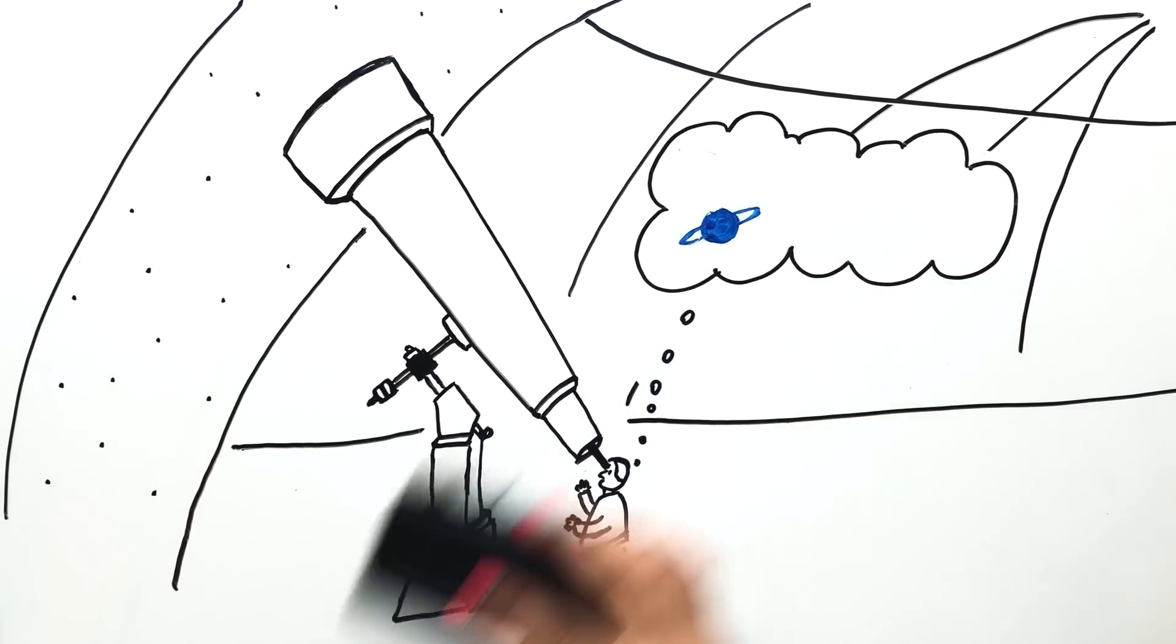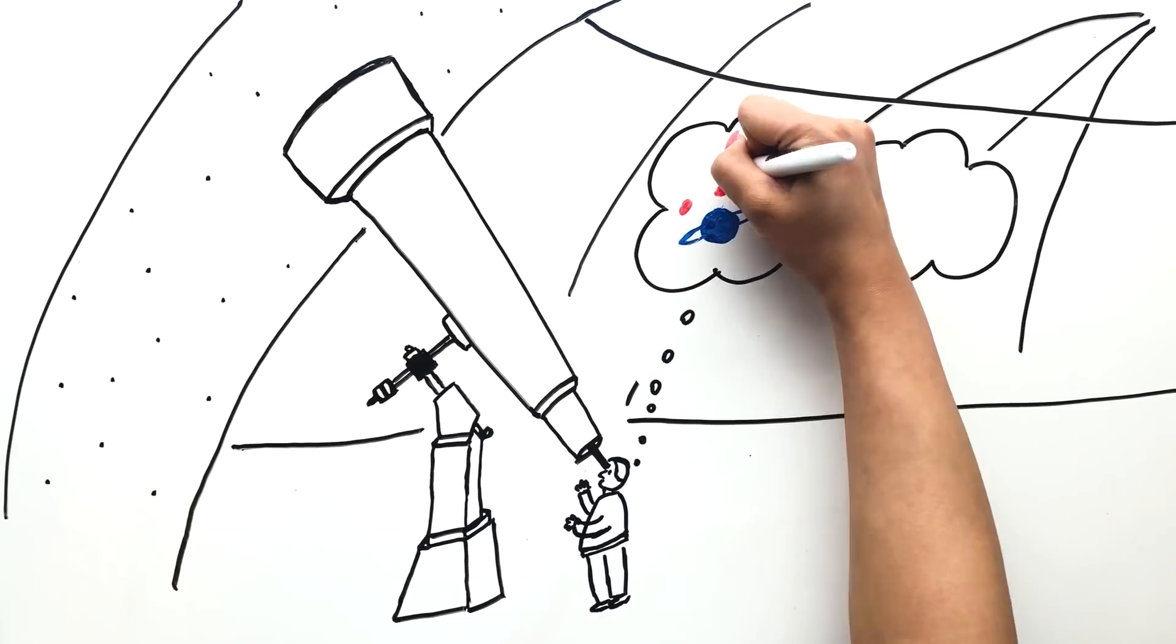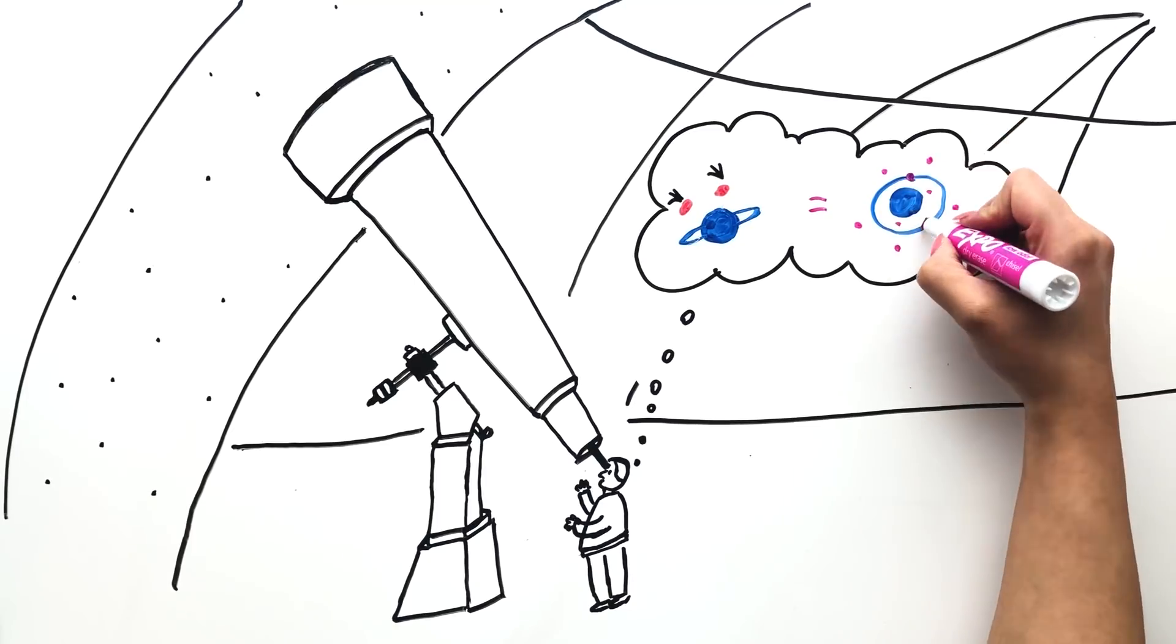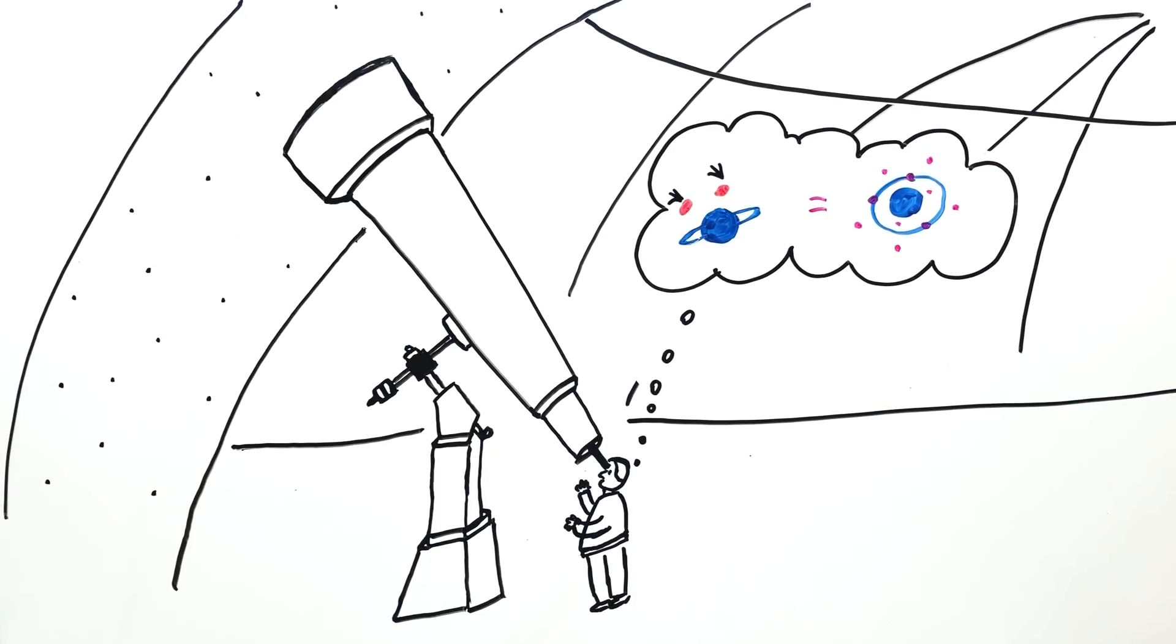This means that not one, but at least two smaller collisions occurred during the planet's formation while it was still surrounded by the disk of gas and dust that its moons formed from.